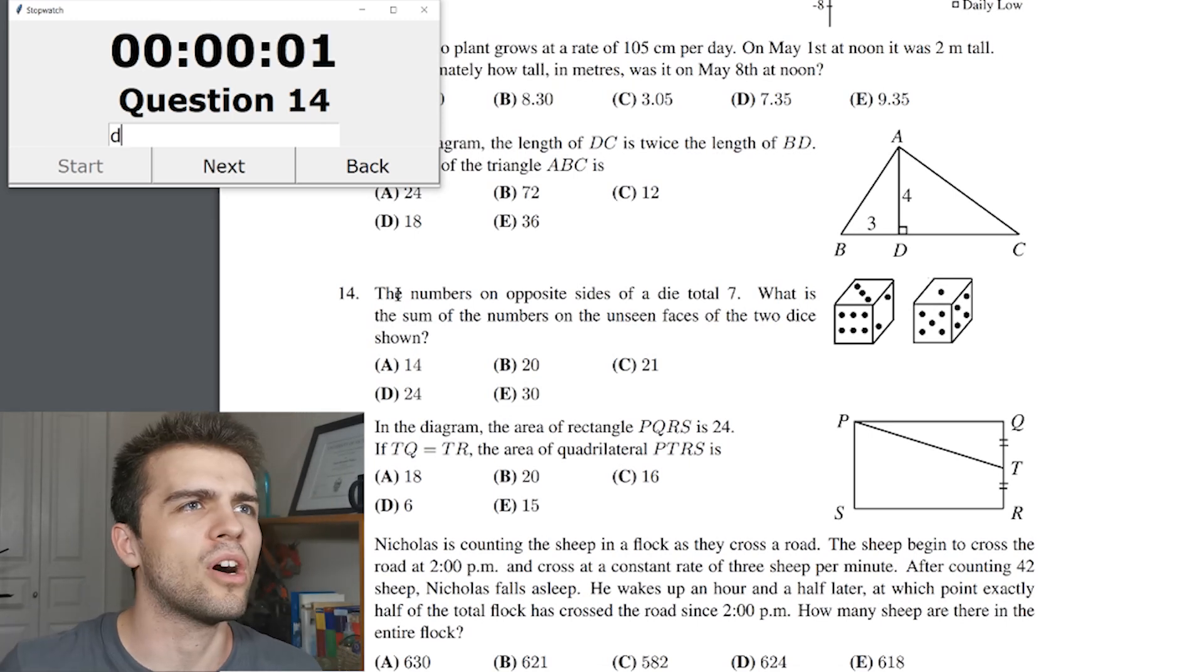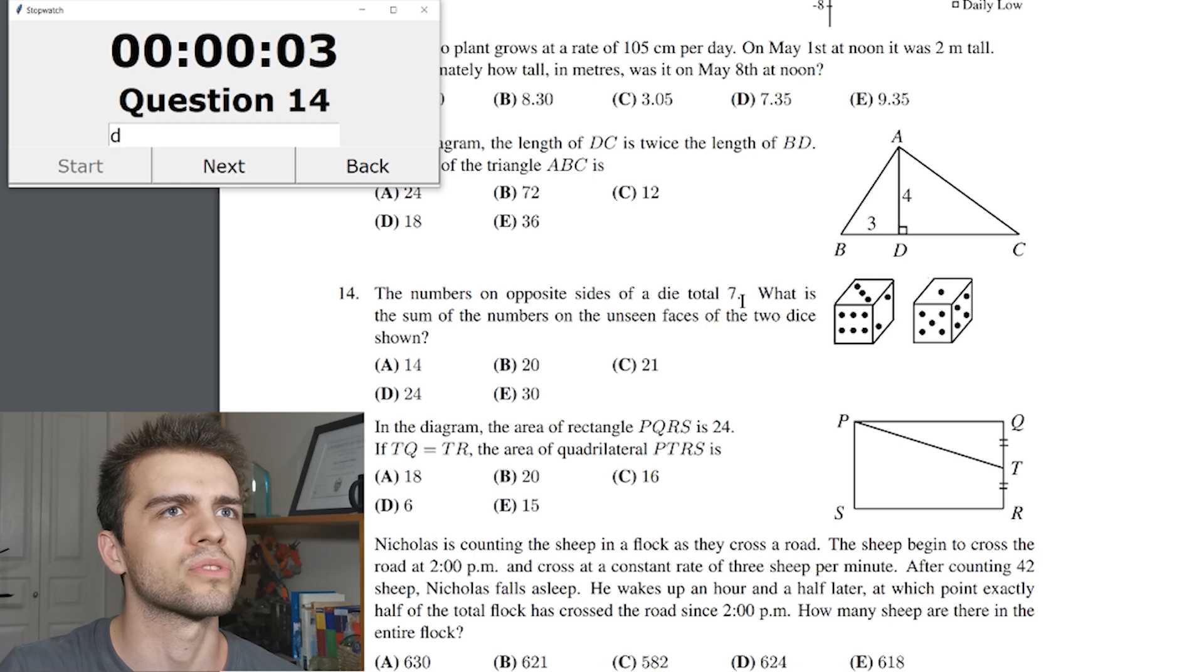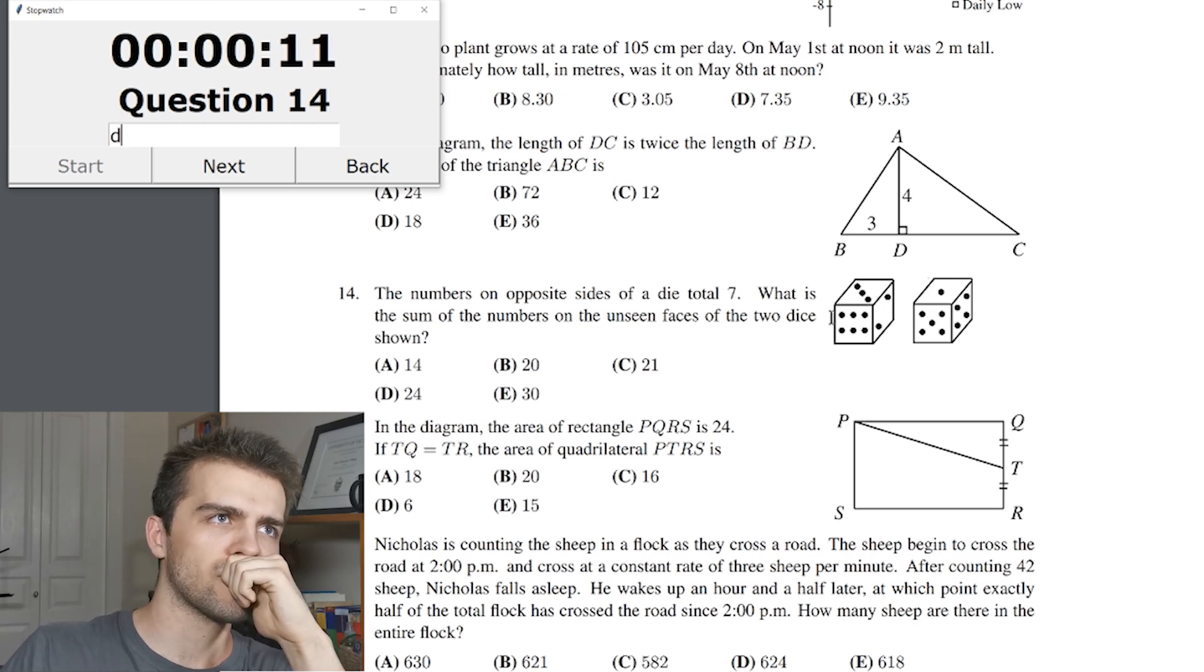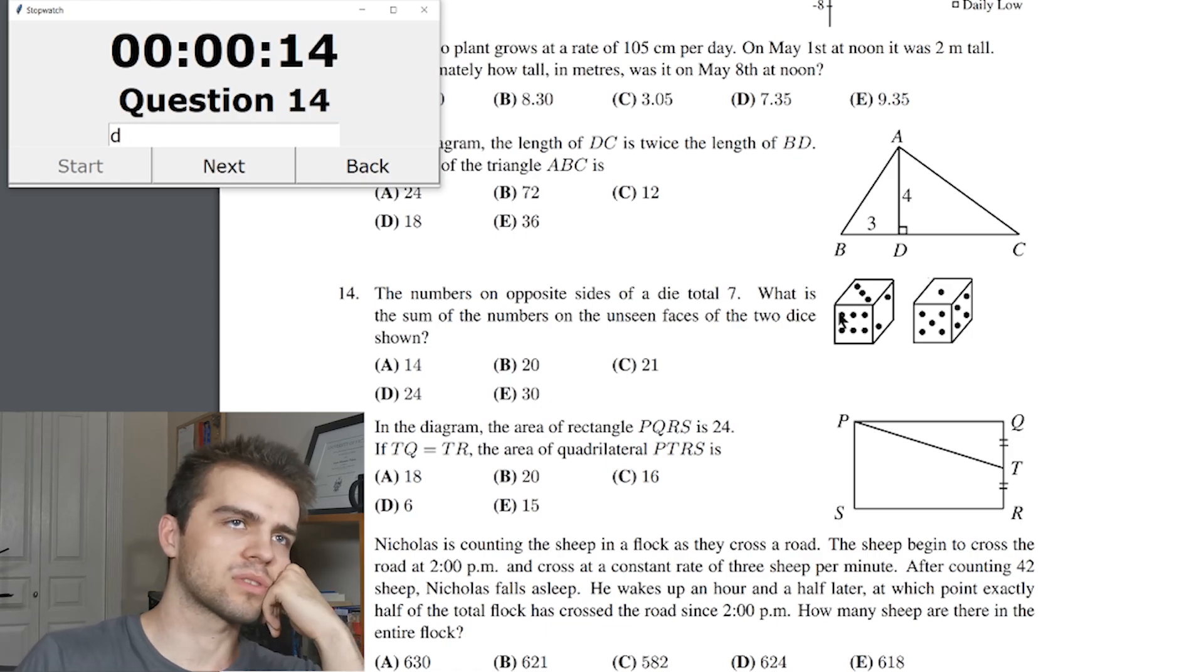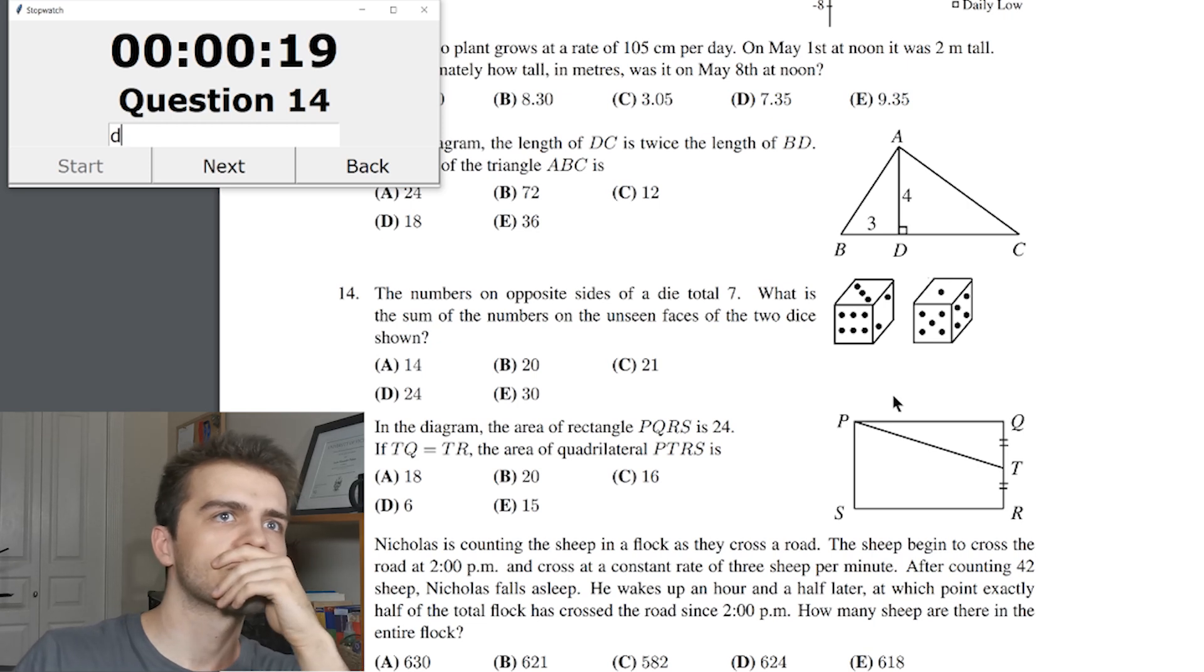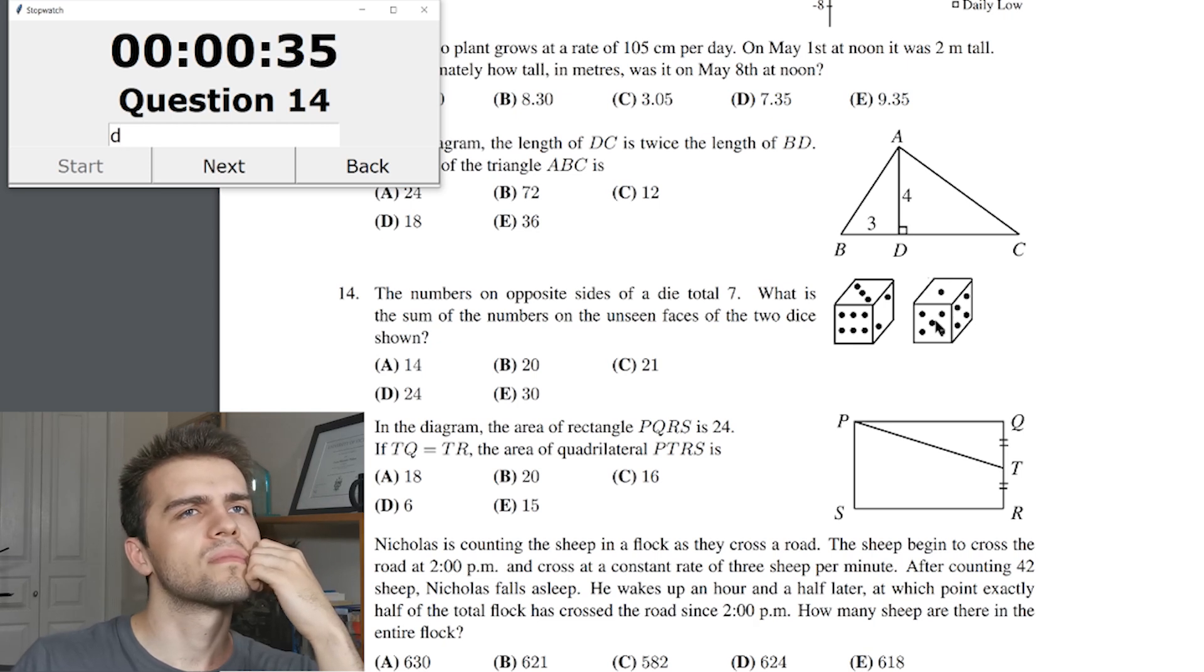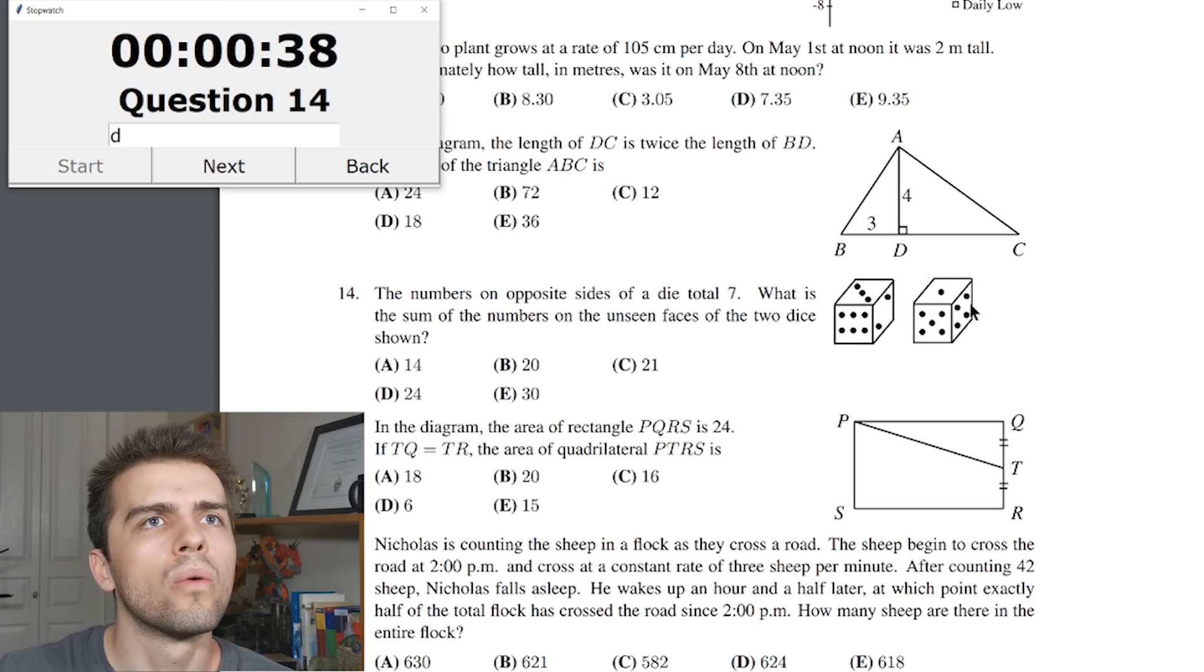The numbers on opposite sides of a die total 7. What is the sum of the numbers on the unseen faces? The total... The numbers on opposite sides of a die total 7. I didn't know that. What is the sum of the numbers of the unseen faces of the two die? Well, this is 2... This must be 5, 1, and 4. 5 plus 1 plus 4 is 10.